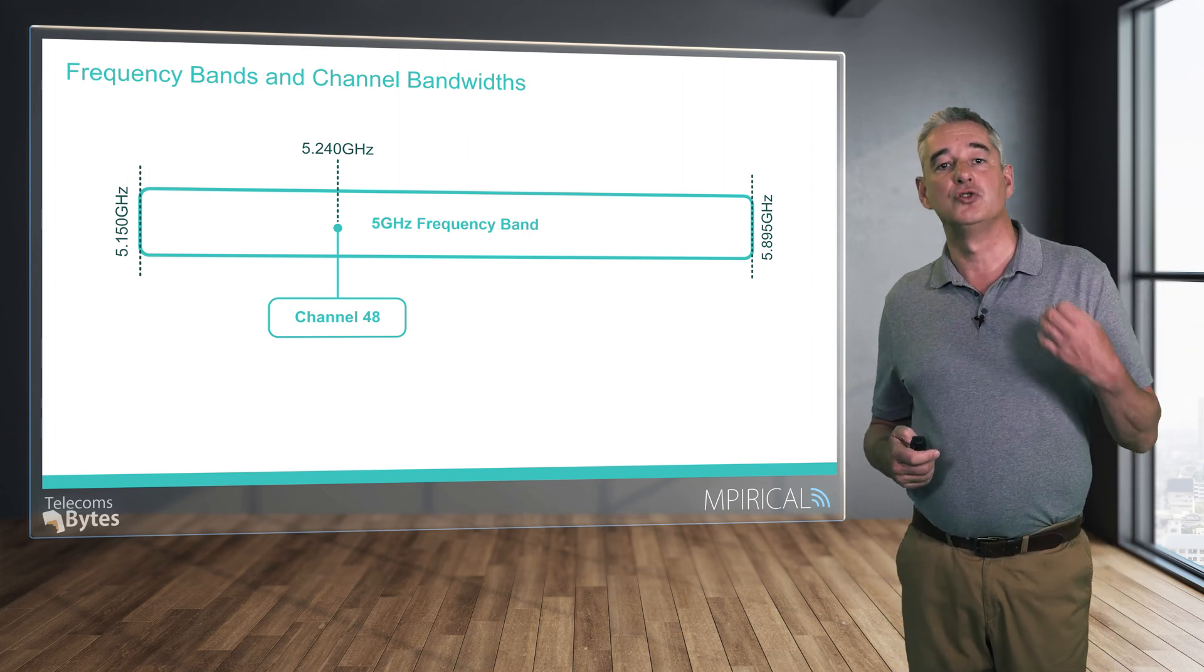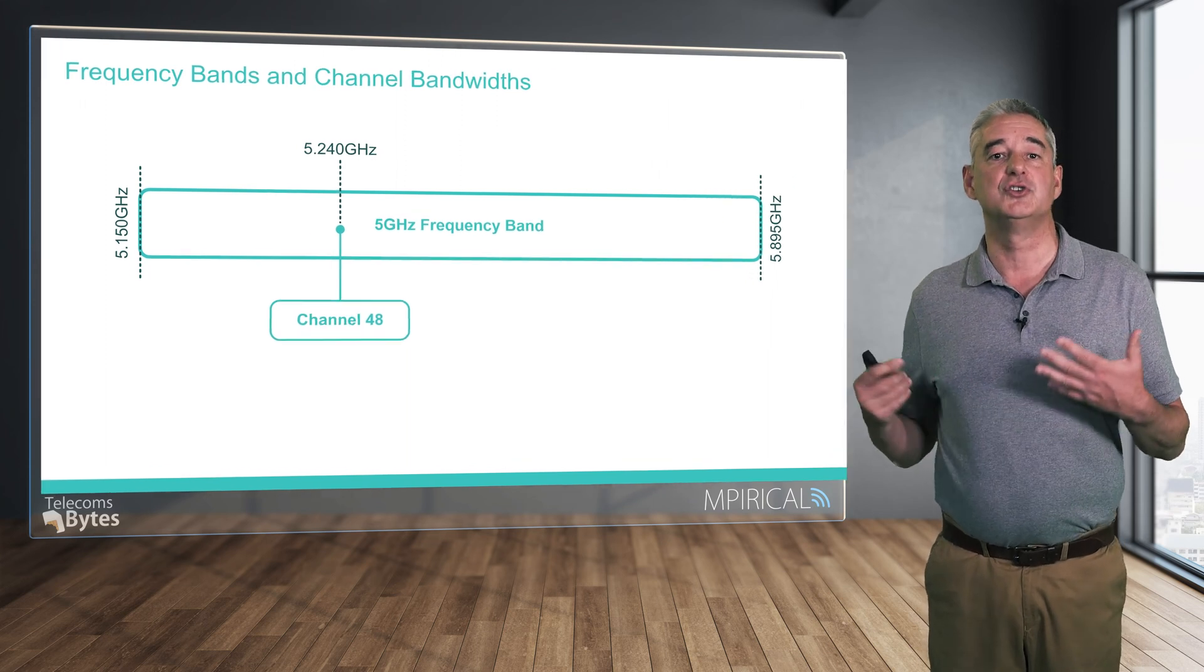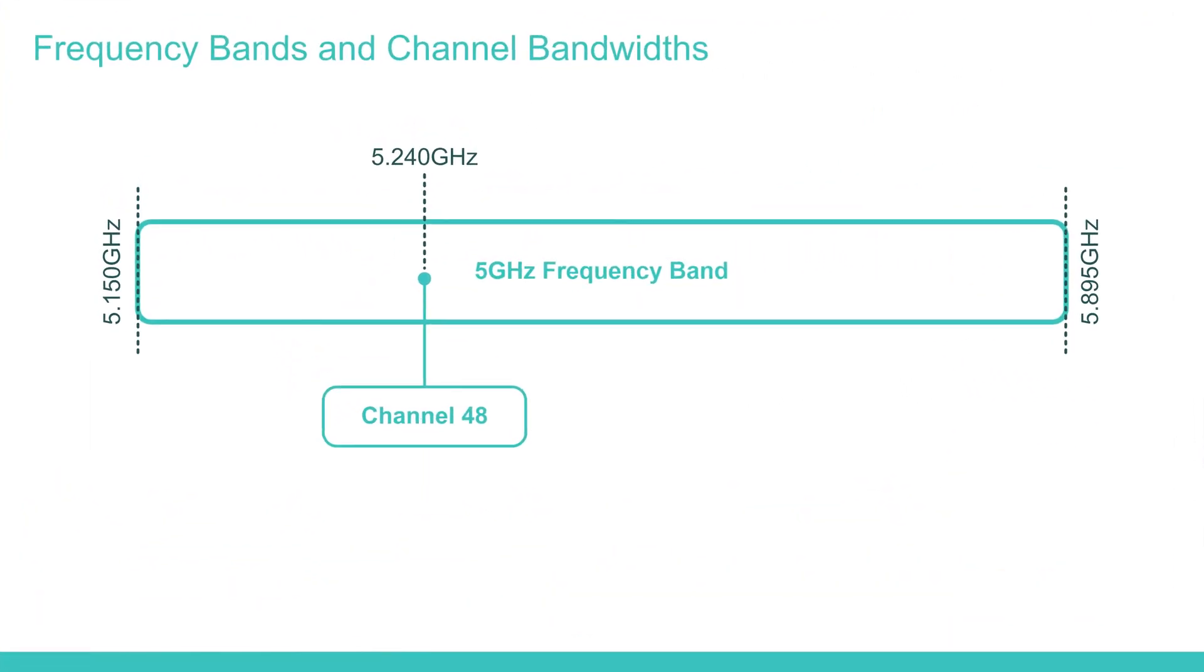However, it is not just this specific frequency which is used by the Wi-Fi, but instead channel 48 incorporates all frequencies between 5.23 and 5.25 gigahertz. As such, it occupies 20 megahertz bandwidth—the difference between the first and last frequency band allocated to channel 48.